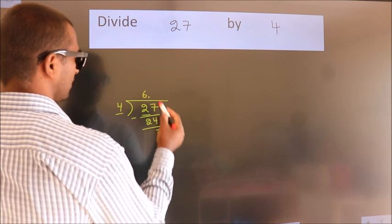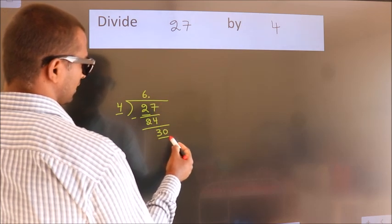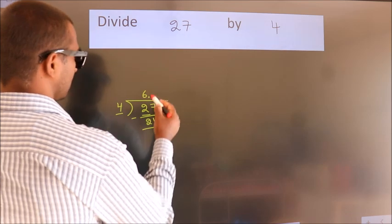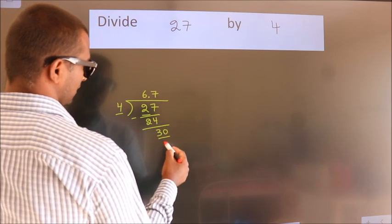we put dot, take 0. So, 30. A number close to 30 in 4 table is 4, 7, 28.